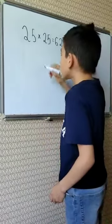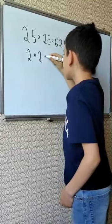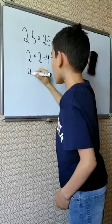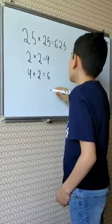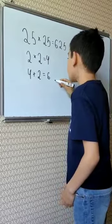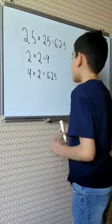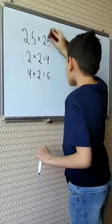First you need to multiply 2 by 2. That's 4. And then 4 plus 2 is 6. And then we need to link 25 to 6. That's 625. And now we'll choose the next number.